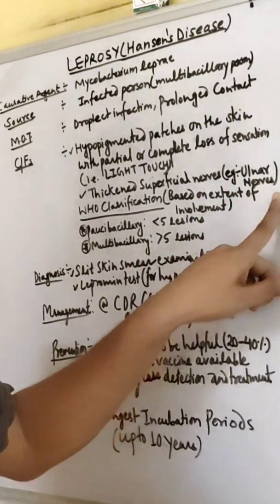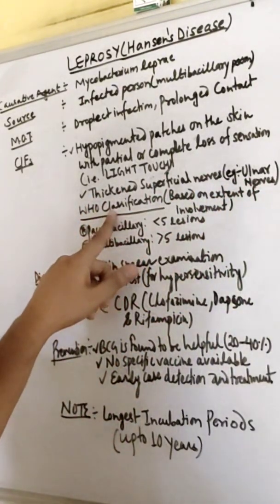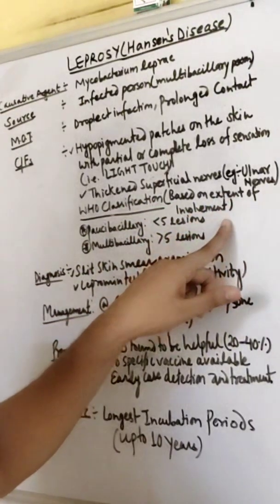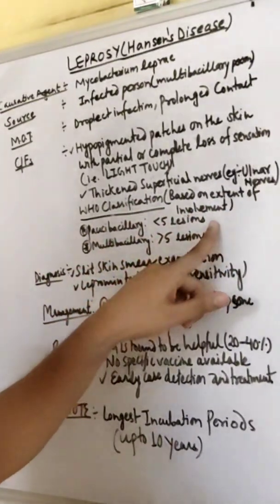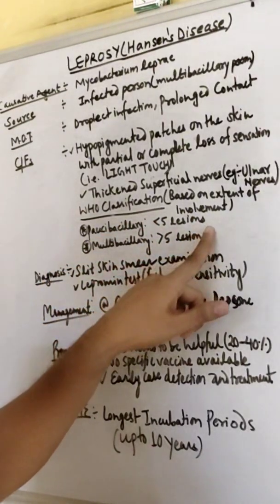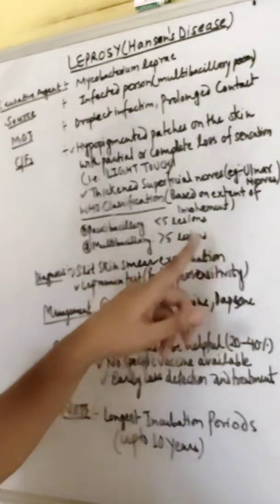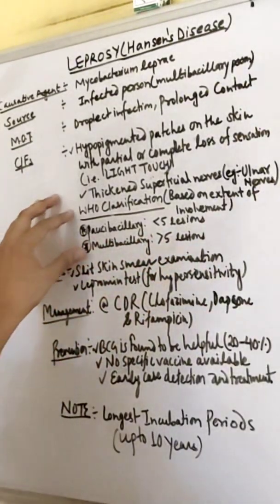WHO classified leprosy based on extent of involvement of nerve or skin lesion. Paucibacillary has less than five skin lesions and multibacillary has more than five lesions. On the basis of lesions we will prescribe the treatment.